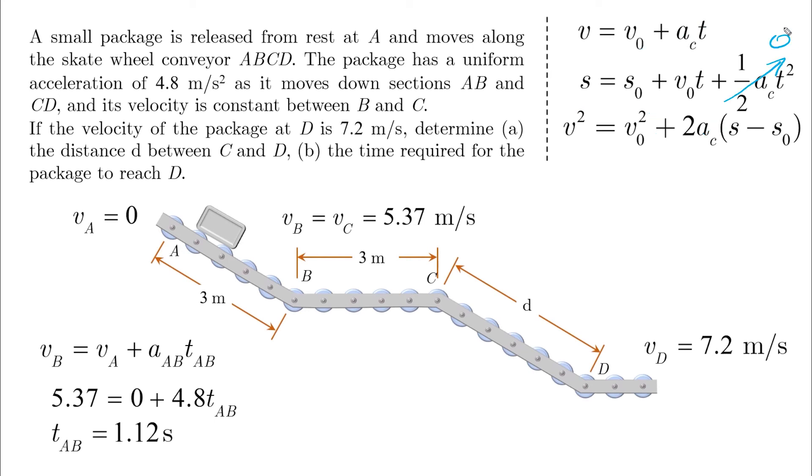So by taking A equals 0, S minus S0, or in this case delta S BC, is equal to VB times TBC. Or you can use VC here, it doesn't matter, they're the same. We have the distance, the velocity, and time is found as 0.56 seconds.